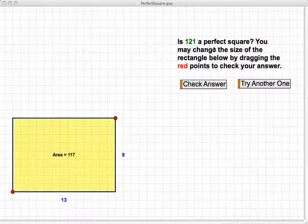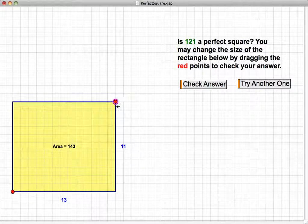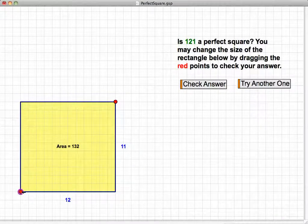So in the case of 121, we start with one that is a perfect square. We know that that can be represented physically by a square that is 11 by 11.